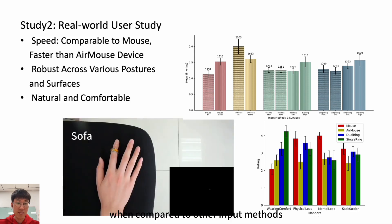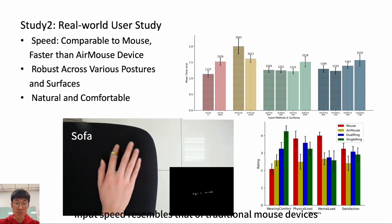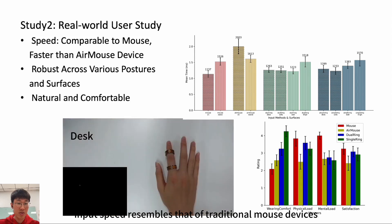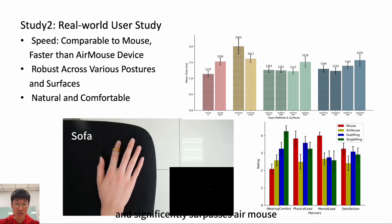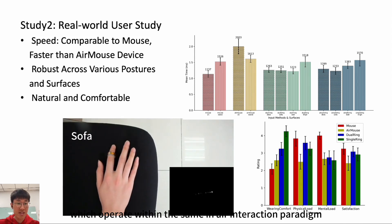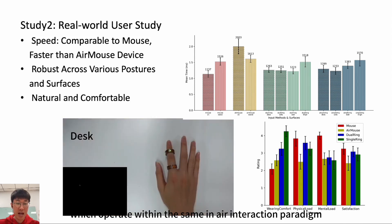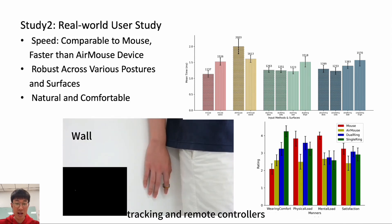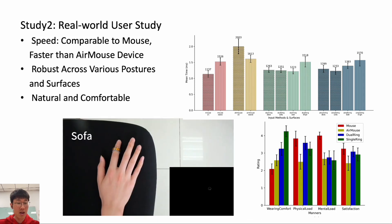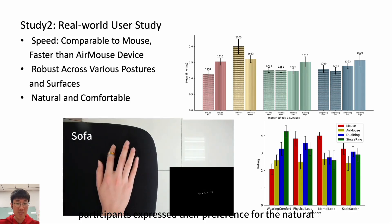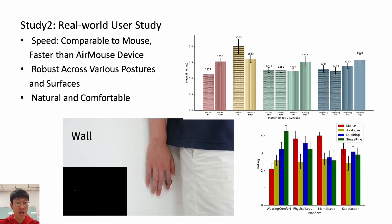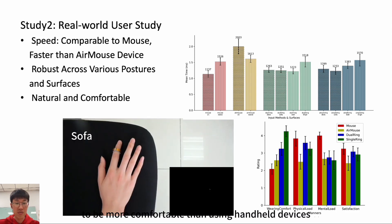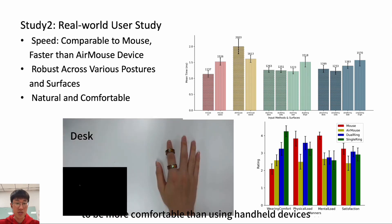When compared to other input methods, MouseRing's input speed resembles that of traditional mouse devices and significantly surpasses AirMouse, which operate within the same in-air interaction paradigm as virtual hand tracking and remote controllers. Participants expressed their preference for the natural feeling of the interaction with MouseRing and found wearing it to be more comfortable than using handheld devices.